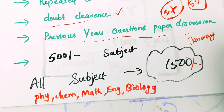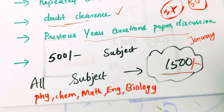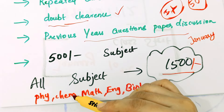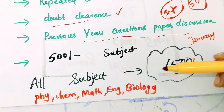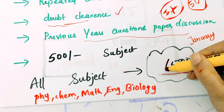So, what do you want to do with admission? How much do you want — contact me in January. In January, you have all the objectives covered: Physics, Chemistry, Maths, English, and Biology. You have all the facilities available.